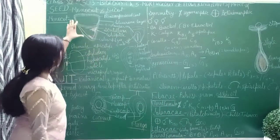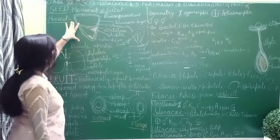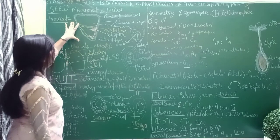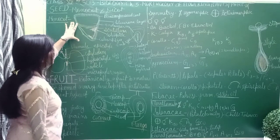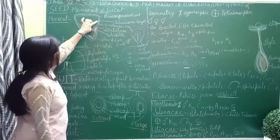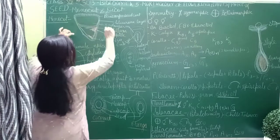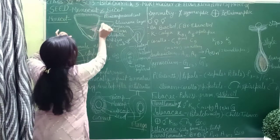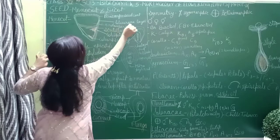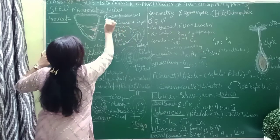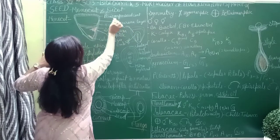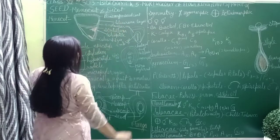We have seen this monocot seed diagram. The outer layer shown here is the pericarp and seed coat.